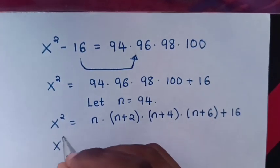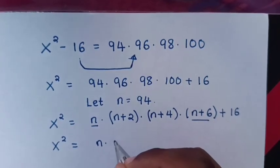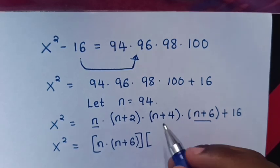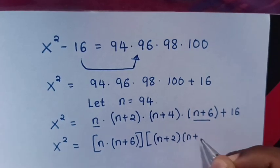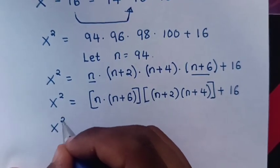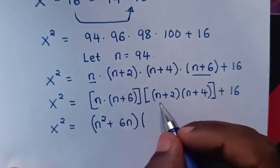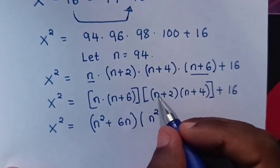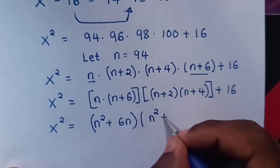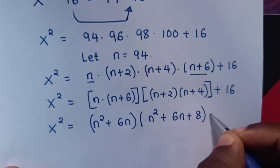Then it will be x squared is equal to n times (n+6), multiplied together, and (n+2) times (n+4), multiplied together. So x squared equals n squared plus 6n, times n squared plus 4n plus 2n plus 8, which gives (n²+6n) times (n²+6n+8) plus 16.